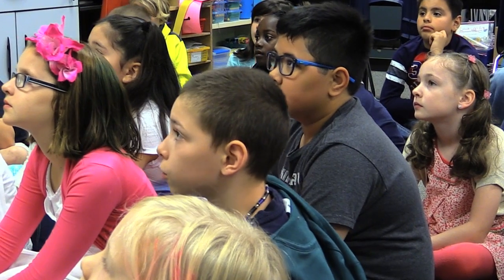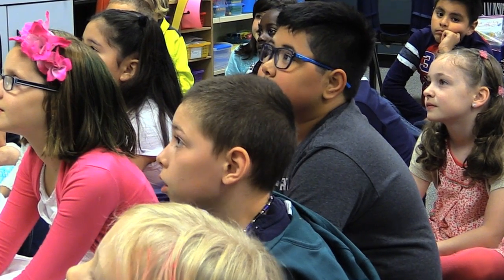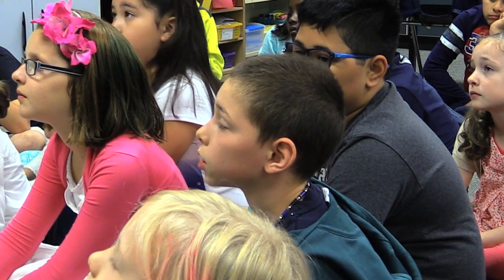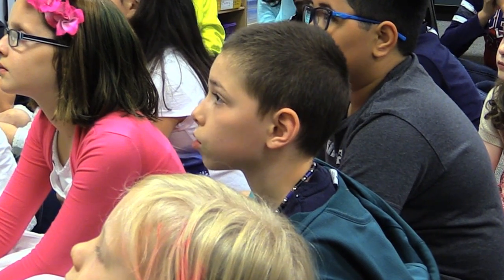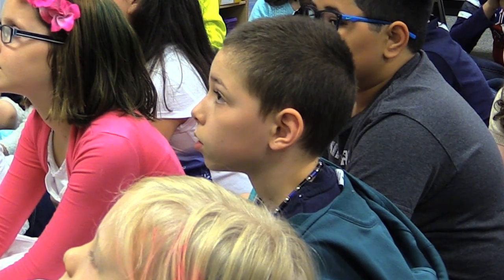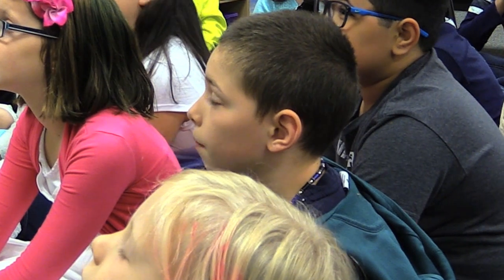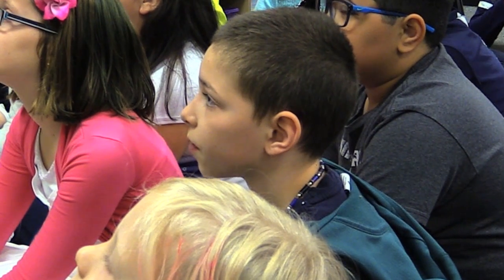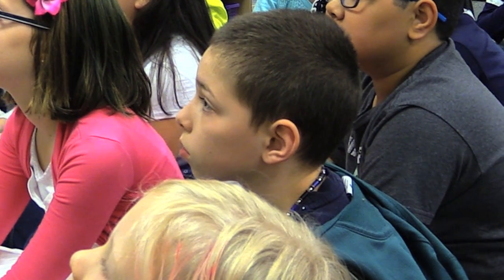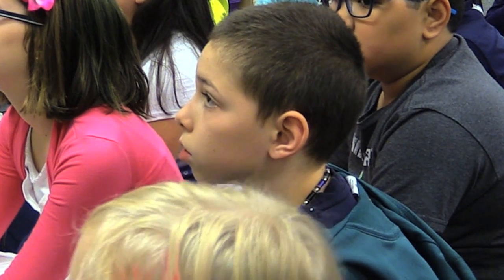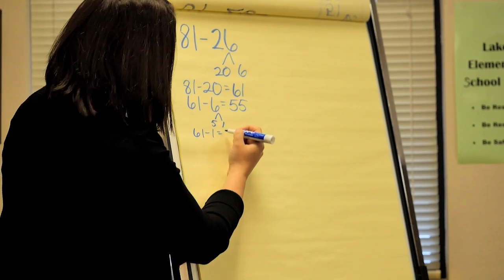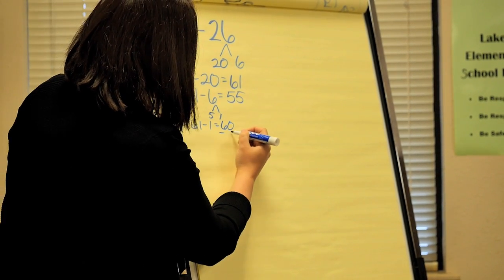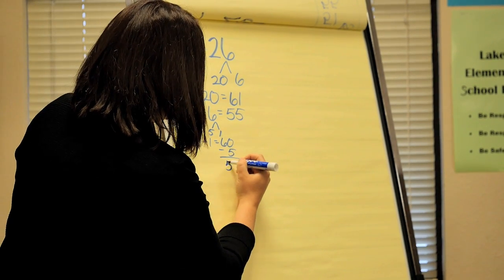How about Mason? I decomposed the subtrahend. I decomposed 26 into 20 and 6. So I did 81 minus 20 equals 61. Then how did you figure out 61 minus 6? I decomposed 6 into a 5 and a 1. I used the 1 to subtract from 61, which got me to 60. And then I took away 5 from 60 and that got me to 55. Any comments or questions for Mason?